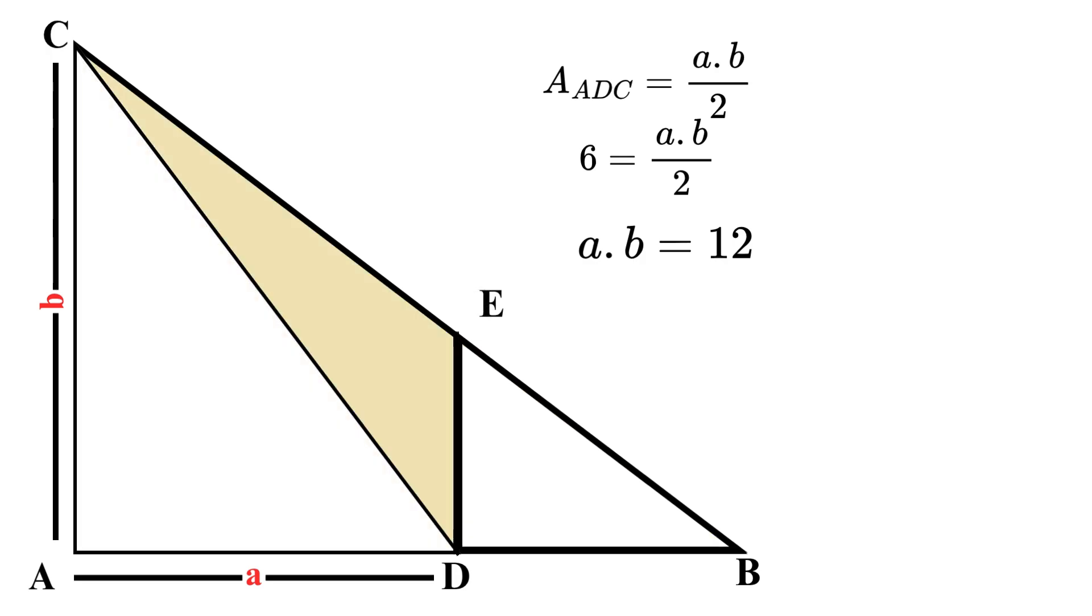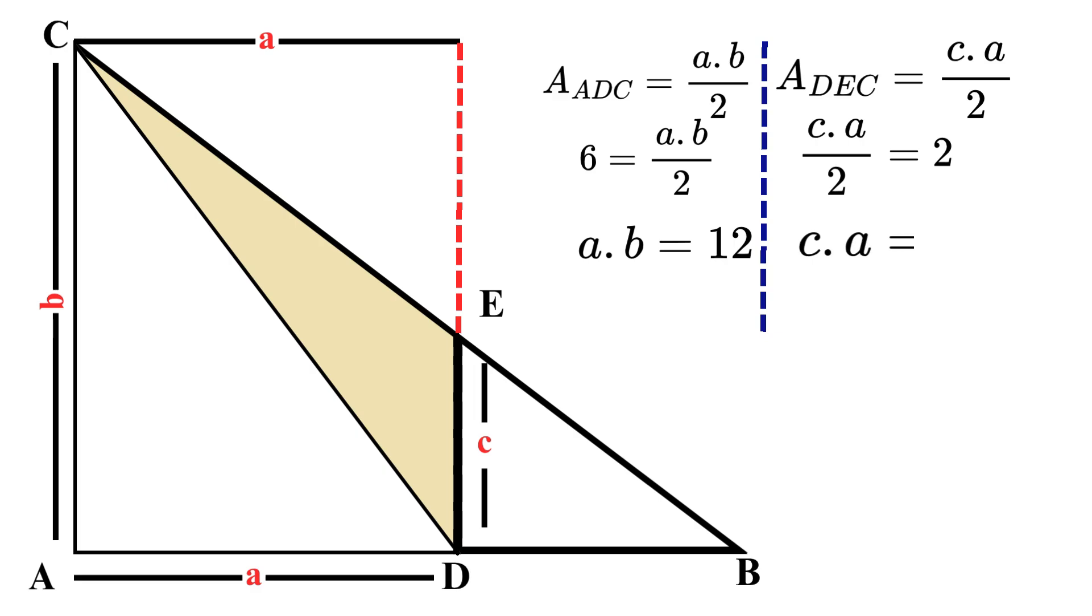Now look at triangle DEC. Here, DC is the base. Let's label it as c, and AD represents the height of this triangle, which equals a. So the area of triangle DEC equals c times a over 2. Since we know that its area equals 2, c times a over 2 equals 2. By simplification, c times a equals 4.